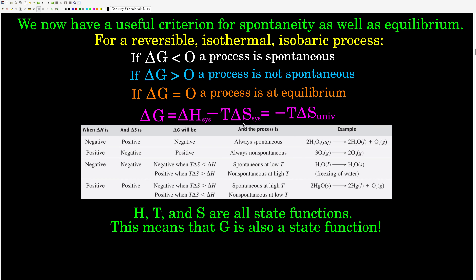If both delta H and delta S are positive, the negative T delta S term is negative, and if that term is larger than delta H, delta G will be negative and the process will be spontaneous. When T is larger, this term starts to dominate and we have a spontaneous process. So under those conditions — positive delta S and positive delta H — higher temperatures favor spontaneity, lower temperatures do not. It's the opposite for negative delta H and negative delta S.